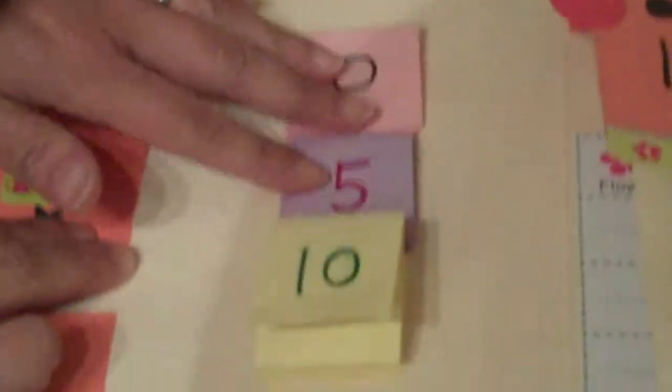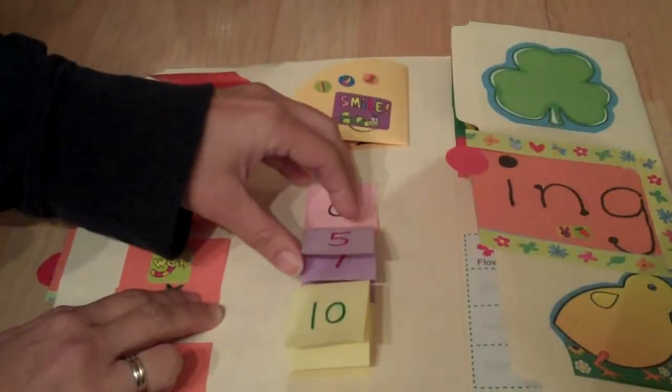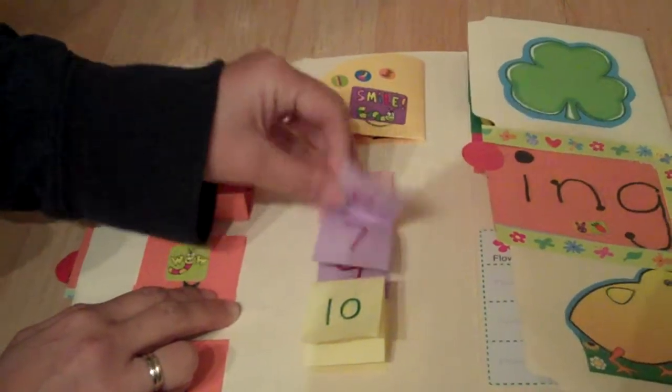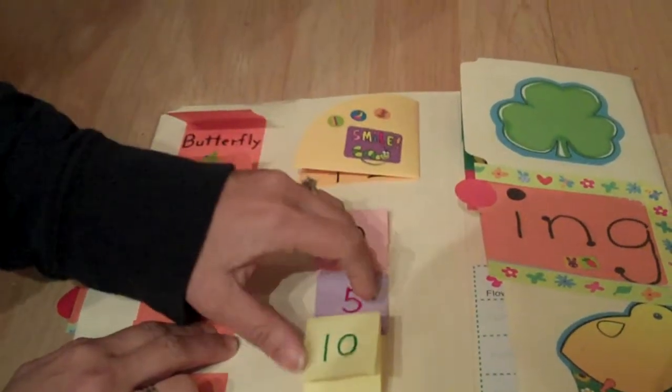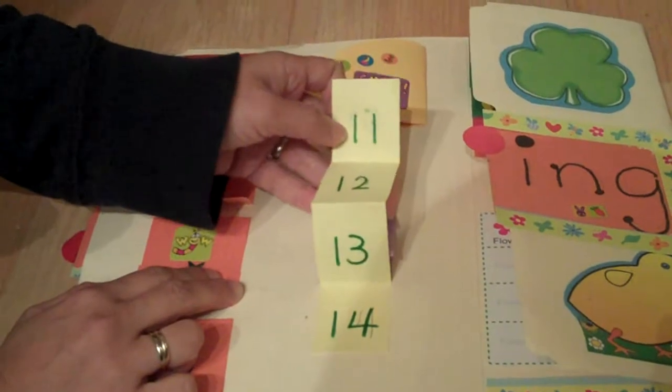And we have here, we have the counting chain. Like zero, one, two, three, four. Or you can pick the color. Five, six, seven, eight, nine. And the yellow, ten, eleven, twelve, thirteen, fourteen.